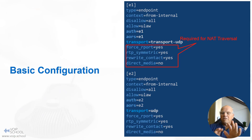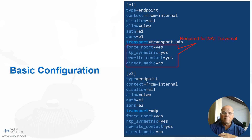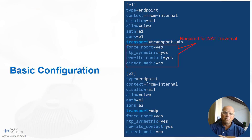Just copy these instructions when doing the labs. Later, we are going to learn how NAT affects Asterisk and what we need to do to support it. But for now, these four settings will do the trick.